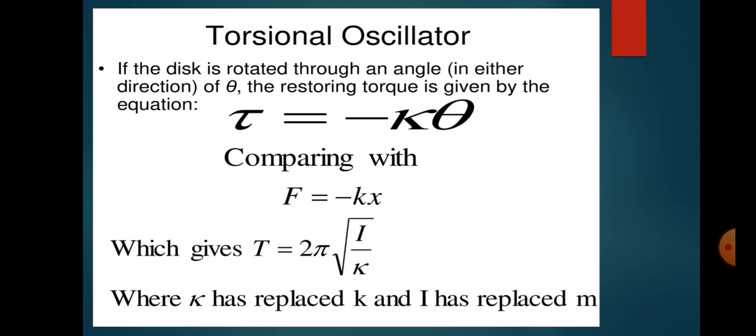For the torsional oscillator, if the disk is rotated through an angle theta in either direction, the restoring torque is given by the equation: torque tau equals minus k theta. Comparing this angular SHM equation with the linear SHM equation F equals minus kx — in linear SHM the restoring quantity was force, and in angular SHM the restoring quantity is torque. Similarly, where linear displacement had x in linear SHM, we write theta for angular SHM.